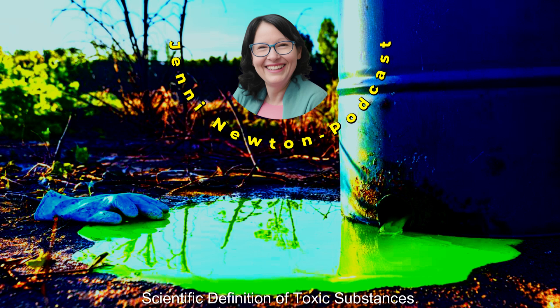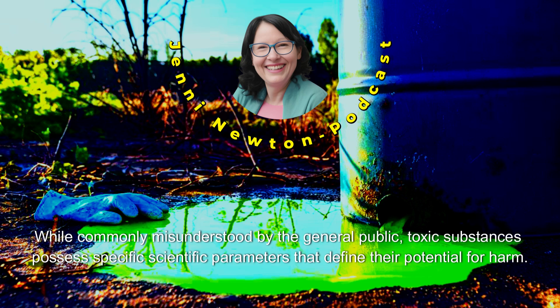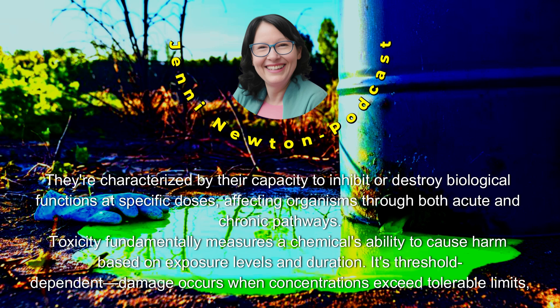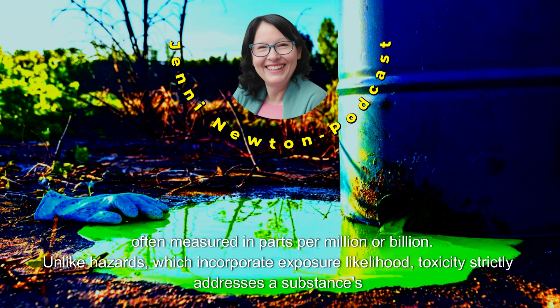Scientific Definition of Toxic Substances: While commonly misunderstood by the general public, toxic substances possess specific scientific parameters that define their potential for harm. They're characterized by their capacity to inhibit or destroy biological functions at specific doses, affecting organisms through both acute and chronic pathways. Toxicity fundamentally measures a chemical's ability to cause harm based on exposure levels and duration. It's threshold-dependent — damage occurs when concentrations exceed tolerable limits, often measured in parts per million or billion.